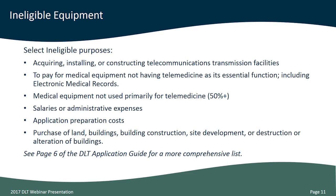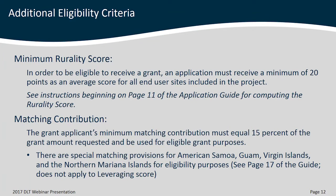Some key eligibility requirements include a minimum rurality score — if your application does not gain a minimum of 20 points based on end-user site populations, the project will not be eligible for funding. The minimum matching contribution is 15%, and matching contributions must also be for eligible purposes. If an application does not demonstrate this minimum 15% match, it cannot be accepted for review and will be denied. Special matching provisions exist for certain areas; see page 17 of the guide. These special provisions do not apply for the leveraging or matching score.